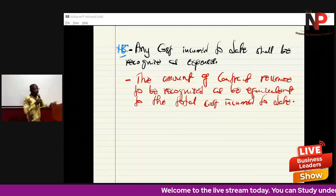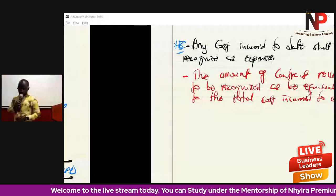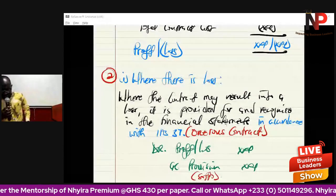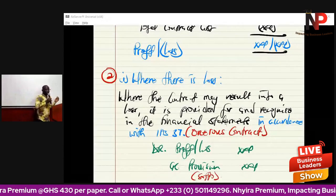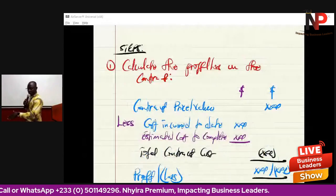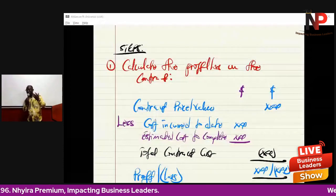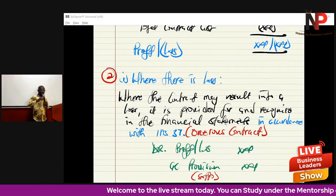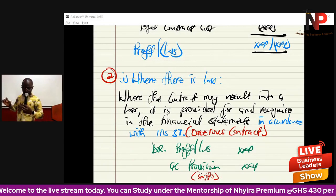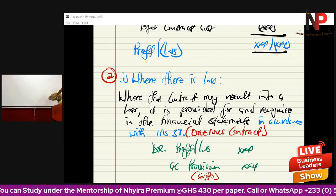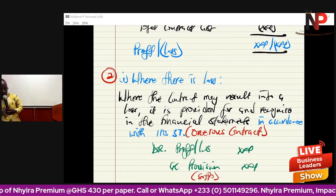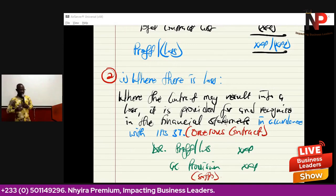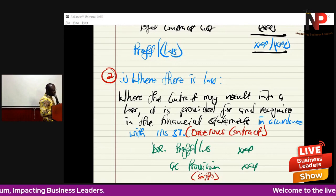So in step one we calculate and find a loss — that loss is recognized as an onerous contract under IAS 37 provisions. This is a one-time event resulting in a loss. If we expected every project to result in a loss, that would be future operating expenses with no present obligation, and in accordance with IAS 37 the entity cannot provide for it.